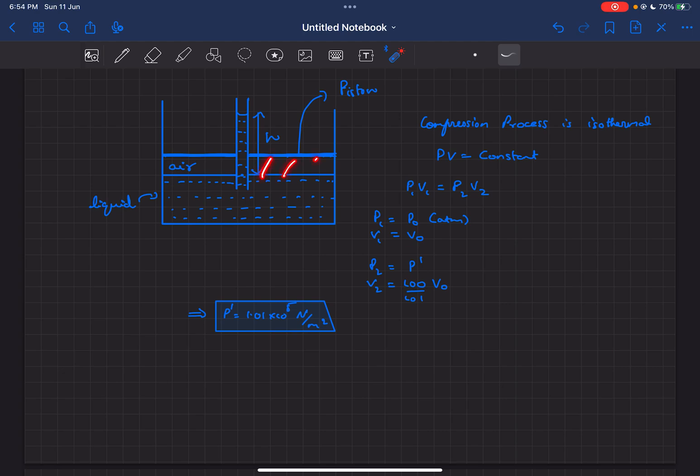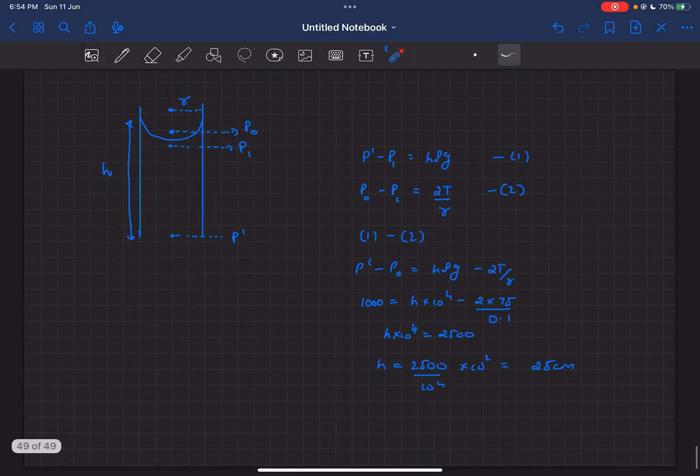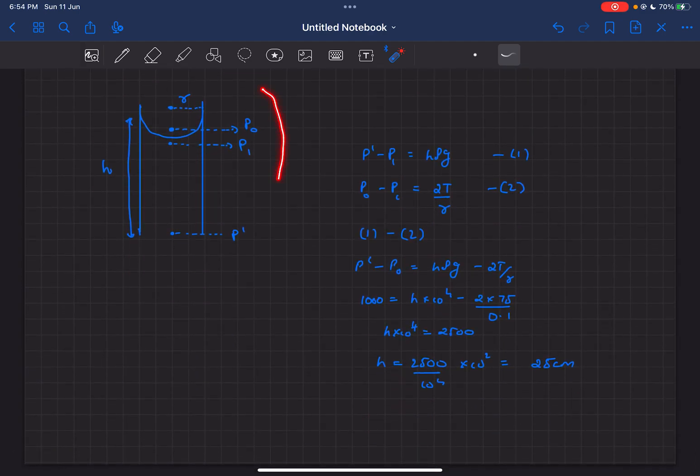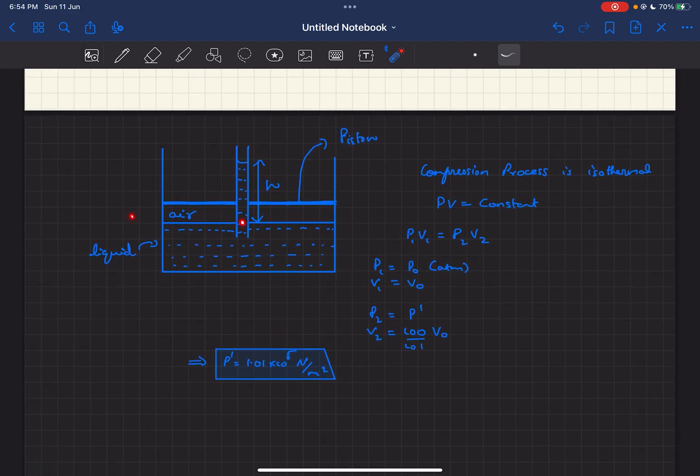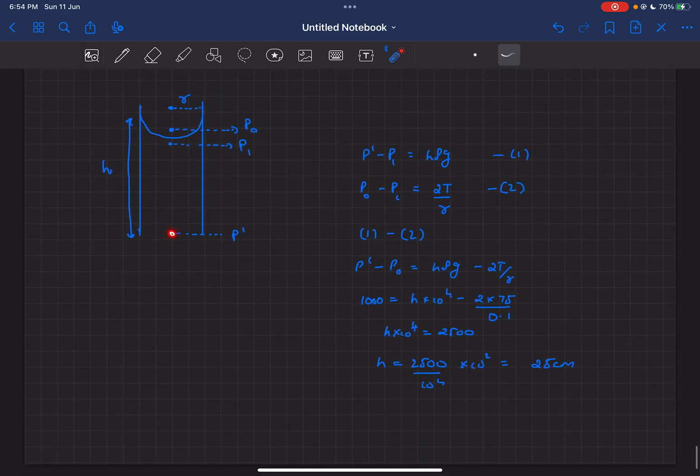Everywhere on the air column now the pressure is p dash. If we draw the FBD of the water column, this point is basically the interface of the air and water column, and the pressure at this point is p dash as we just calculated above.